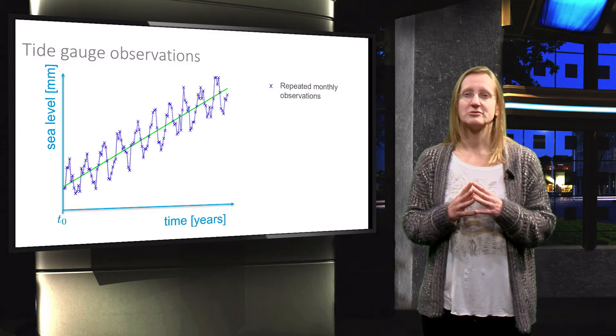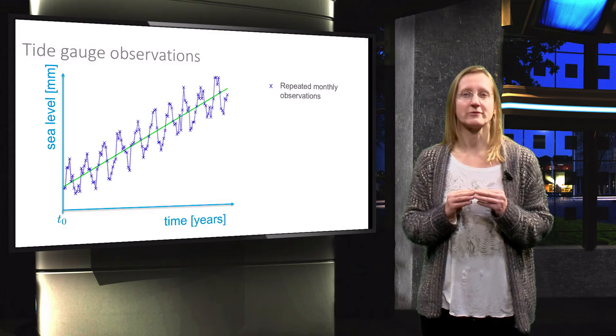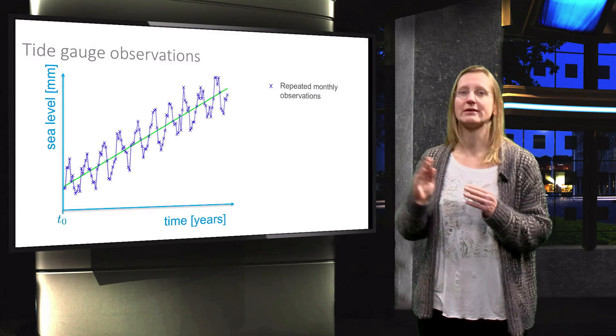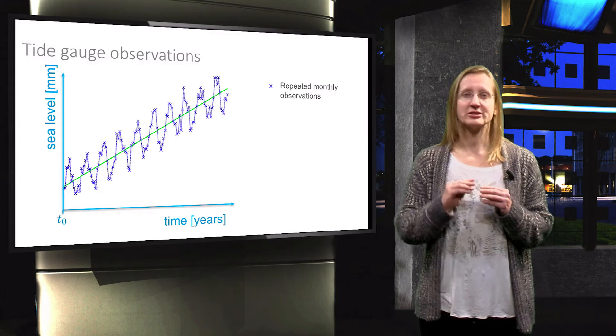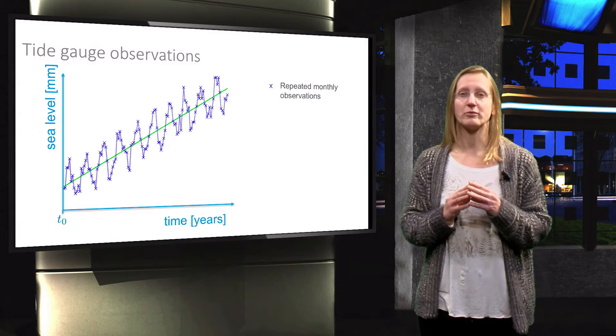Our goal is thus to set up the functional model where we consider only the linear trend of sea level rise for now, as indicated by the green line. As a first step we need to identify the observations, the known and the unknown parameters.